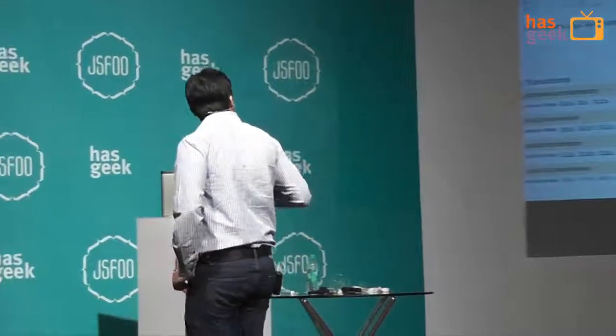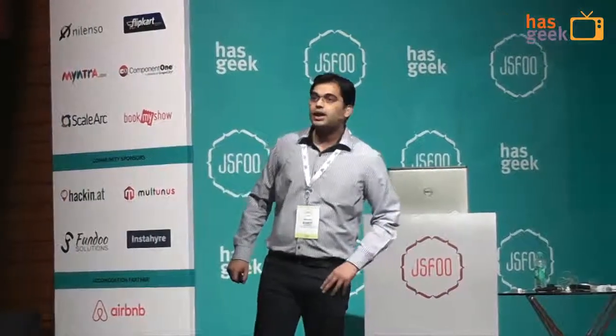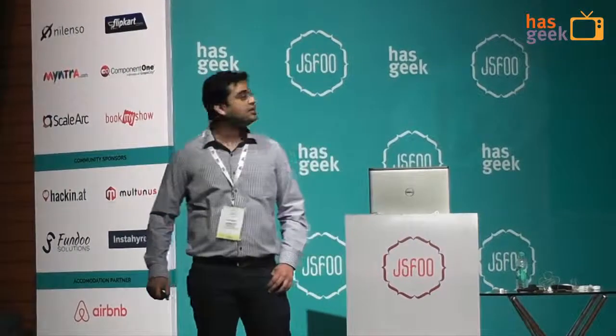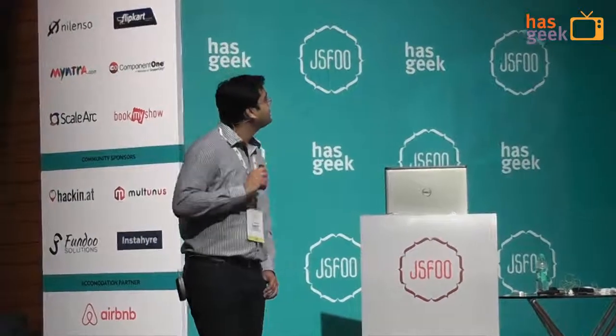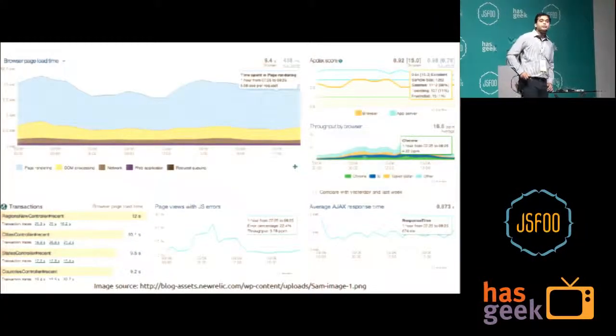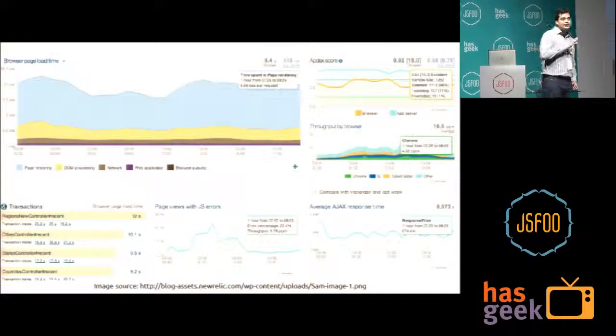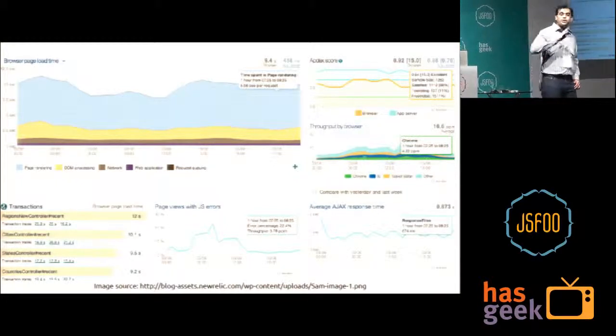This is a sample dashboard taken from New Relic, a RUM provider. In this we can see a lot of things such as page load time, errors, and page views. These are again segregated by browser types — much like Google Analytics, but for performance.